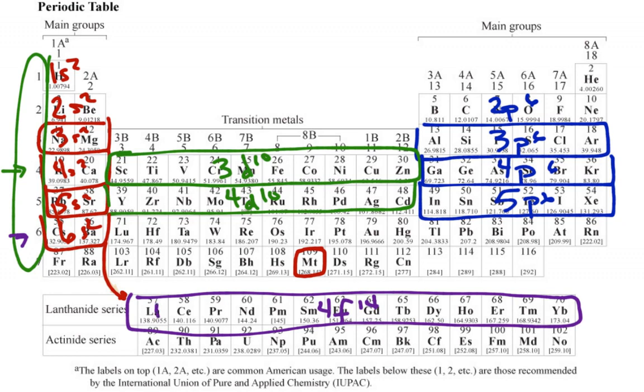And I got the 14 because 1, 2, 3, 4, 5, 6, 7, 8, 9, 10, 11, 12, 13, 14. And that's just how I got all of them. There's 2 in the S, 6 in the Ps, 10 in the Ds, and so on and so forth. So then we would go 5D10.